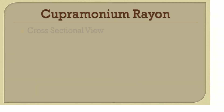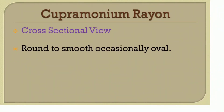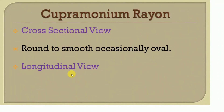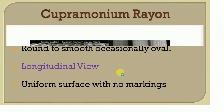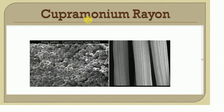Cuprammonium rayon fiber in cross-sectional view has a round to smooth appearance and is occasionally oval in shape. In longitudinal view, it has a uniform surface with no markings — no striations or convolutions are visible. In the image, the round to smooth cross-section and the uniform longitudinal surface with no markings are clearly observed.